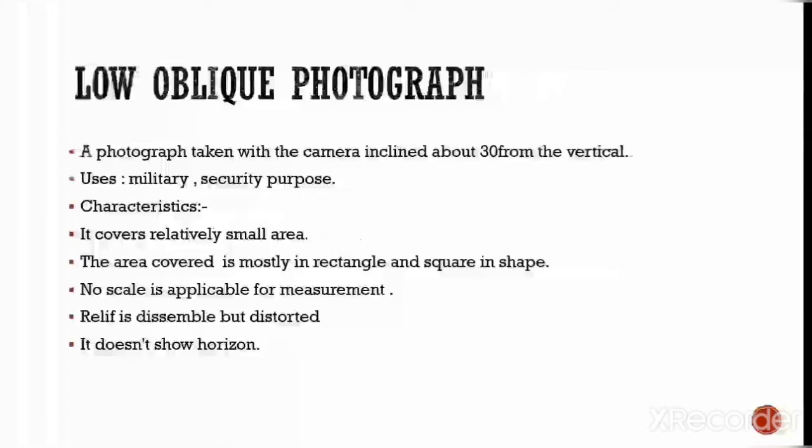A low oblique photograph is taken with the camera inclined about 30 degrees from the vertical. It is used for military or security purposes. Its characteristics include: it covers a relatively small area; the area is covered in a rectangular or square shape; no scale is applicable for measurement; relief is visible but distorted; and it does not show the horizon.